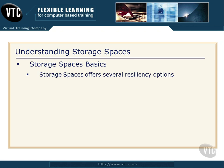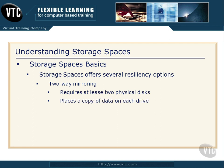Storage Spaces offers several resiliency options. Resiliency is another fancy word Microsoft is using now for what we used to know as fault tolerance. The first option is two-way mirroring, which is what we've always known as mirroring. It requires at least two physical disks, and we place a copy of the data on each drive every time we save a file. It's automatically done, so we end up with two identical disks with identical data.